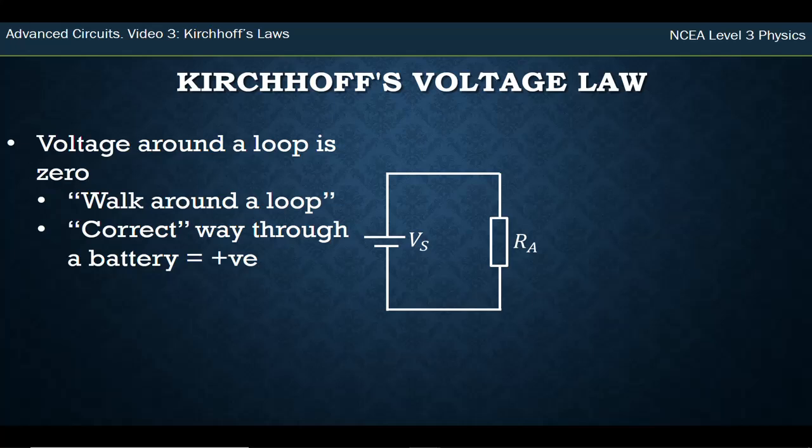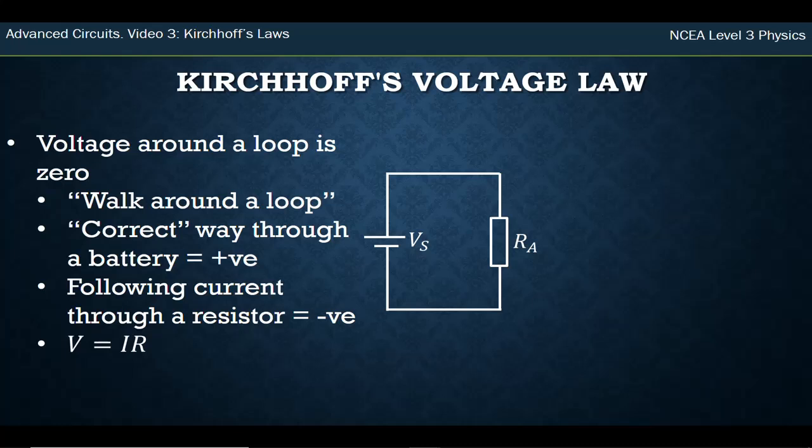Following the current through a battery you get a positive value, and following the current through a resistor you get a negative value. Then you can use V = IR. You'll see these in an example and see that it kind of makes sense.